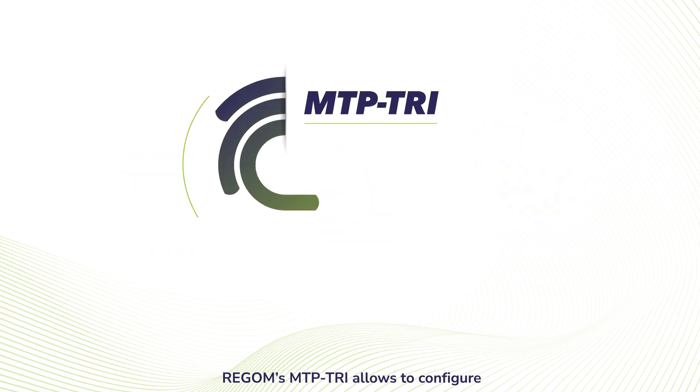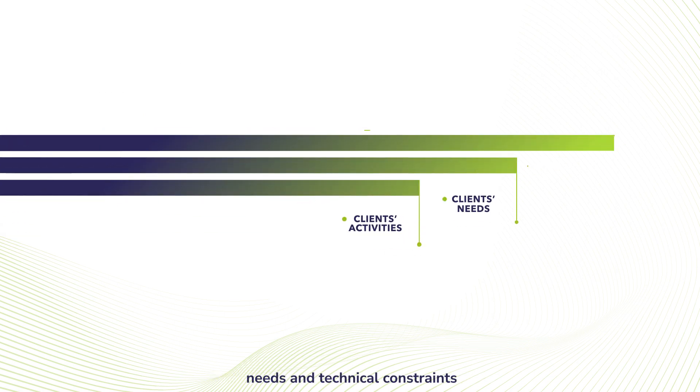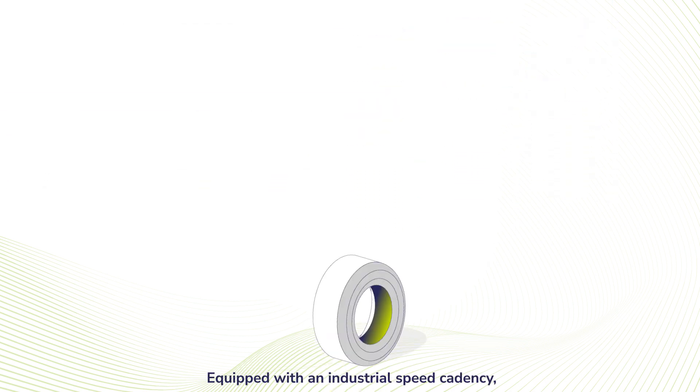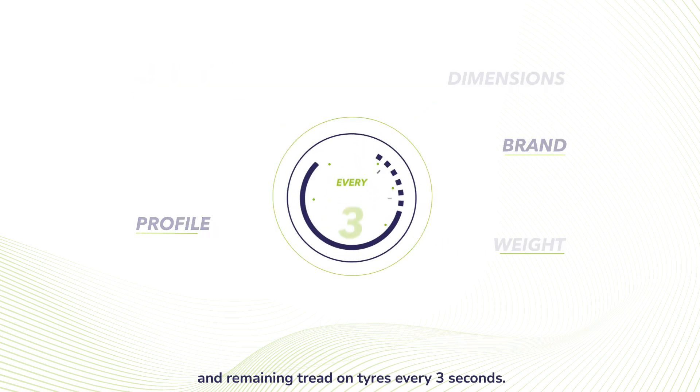REGOM's MTP-TRI allows to configure sorting lists according to clients' activities, needs, and technical constraints linked to used tires. Equipped with an industrial speed cadence, the machine reads and analyzes brands, profiles, dimensions, and remaining tread on tires every three seconds.